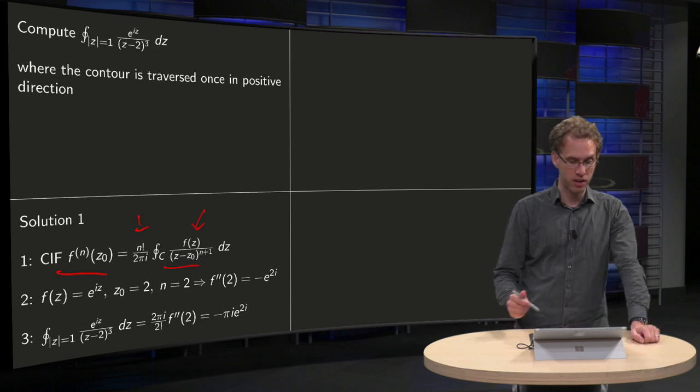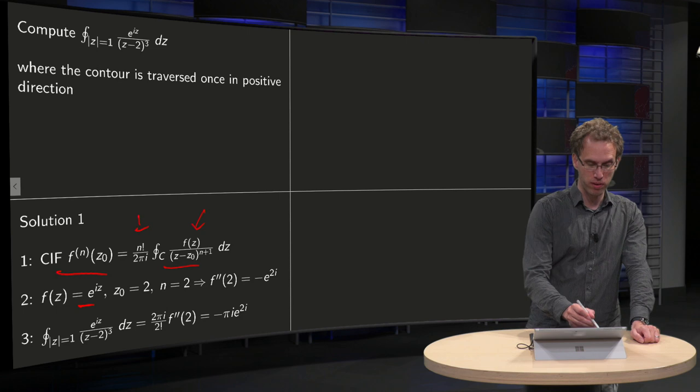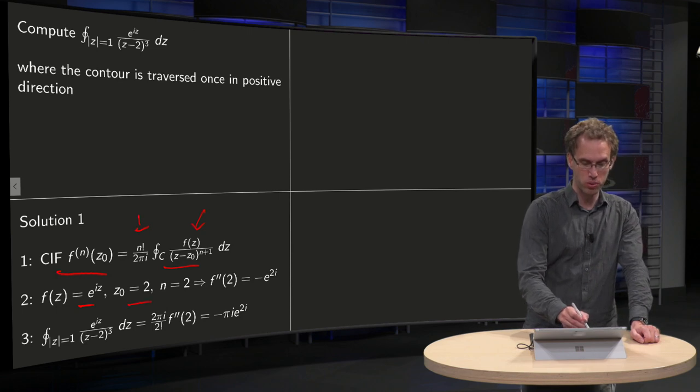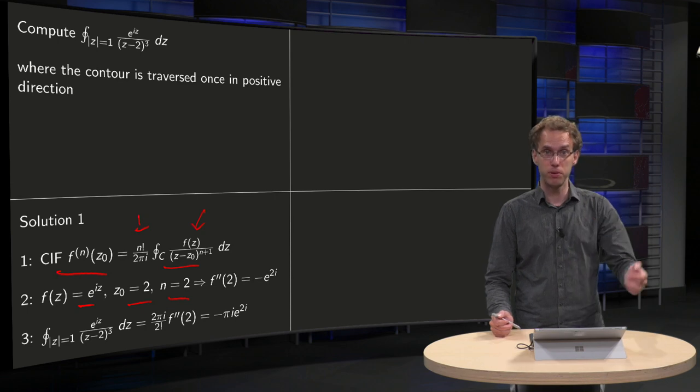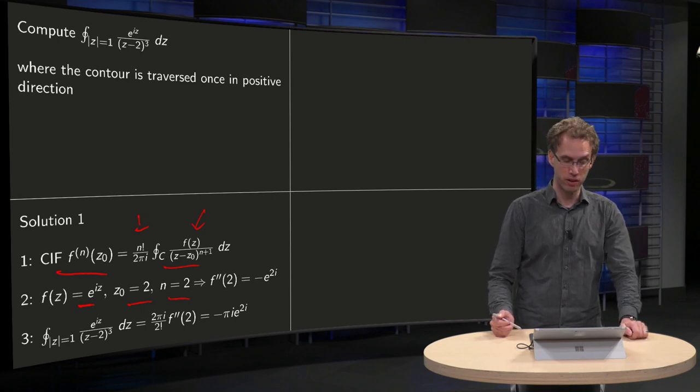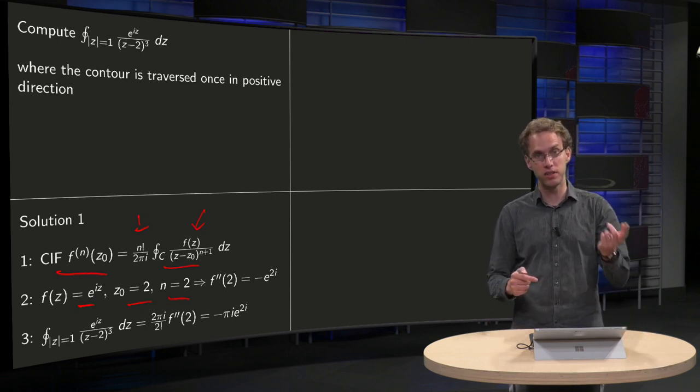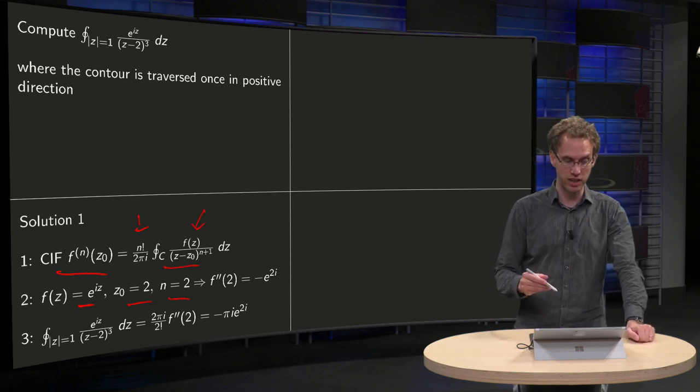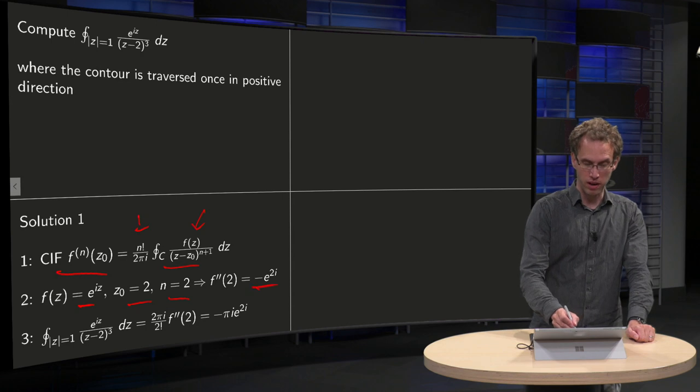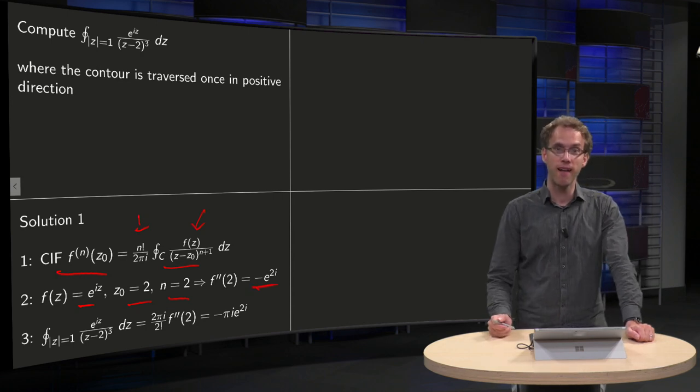How can we apply it? Well, we define f(z) equals e to the power iz, z0 to be 2, n to be 2 as well. Then we can compute f double prime. So differentiate f twice, you get i times i times e to the power iz, so minus e to the power iz.